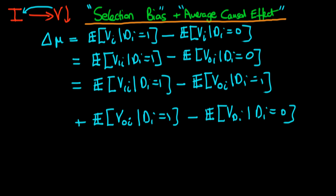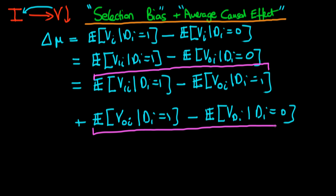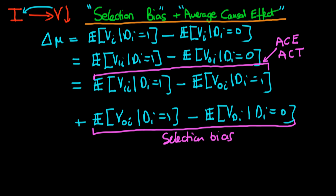So why have I done that? I've now got two different expressions: this top expression here and this bottom expression. As it turns out, this top expression is what we normally call the average causal effect — or technically the average causal effect on the treated — whereas this bottom expression represents what we call selection bias. I'm going to explain why both of these terms represent each of these concepts in a moment.